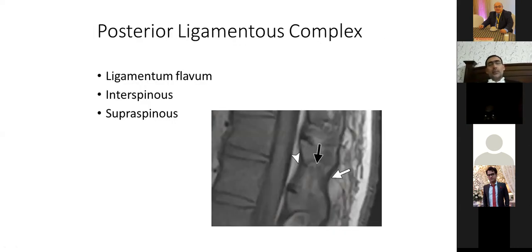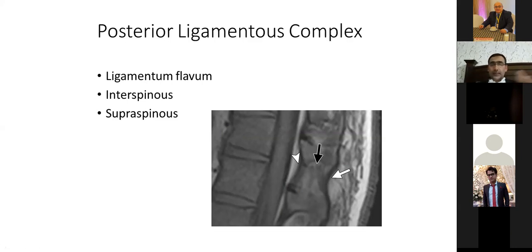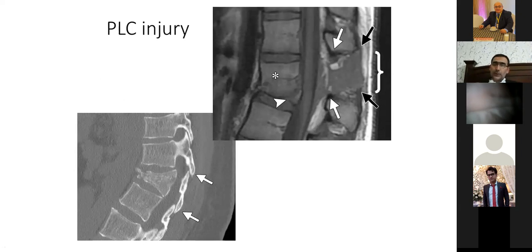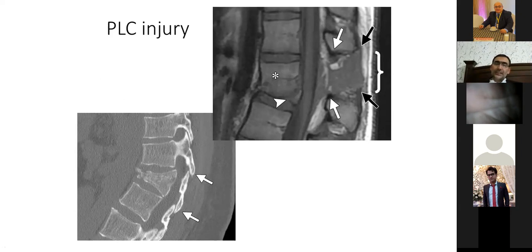Posterior ligamentous complex injuries are serious pathologies. Three key structures to look for are the PLL (posterior longitudinal ligament), supraspinous ligament, and interspinous ligament. In traumatic cases, we always do CT first to look for acute fractures, then note in the CT report to correlate with MRI for soft tissue injuries, and give a combined report.